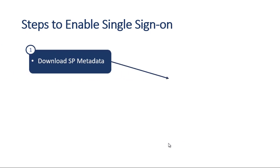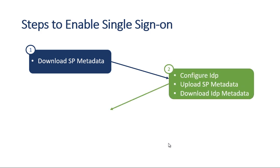There are three steps. Step one is to download the service provider metadata. The service provider in our case is Cisco Unified Communications Manager, Unity Connection, IM and Presence server, or Expressway servers. Today we are only going to see how to do it with Cisco Unified Communications Manager, but the process remains almost the same, and we'll cover Unity Connection and Expressway in future videos.